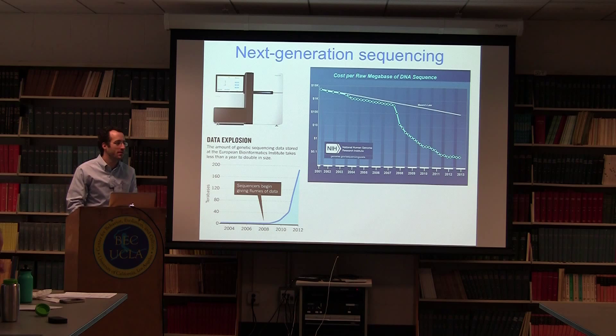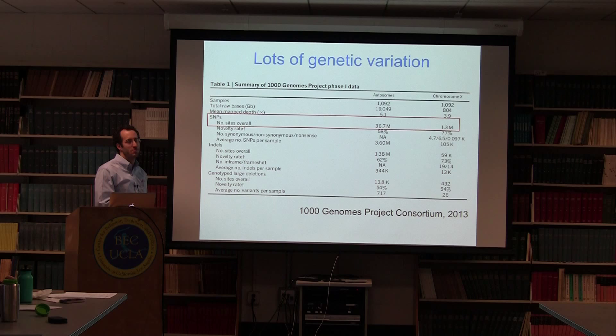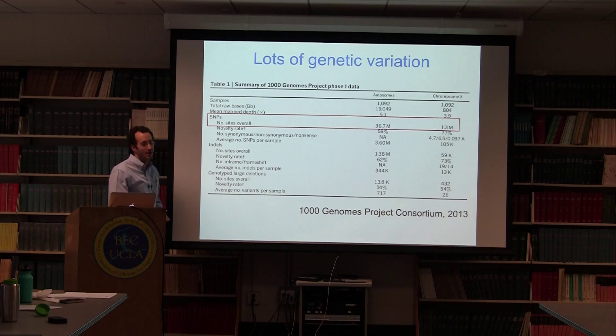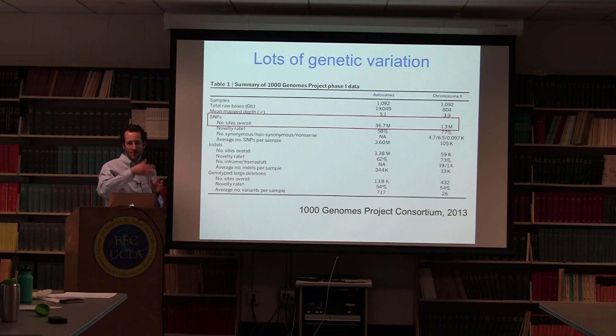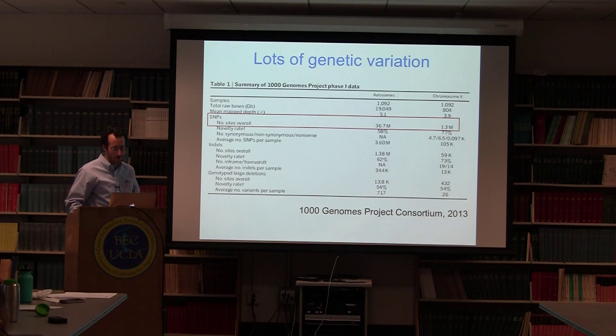We are entering a time when the field of population genetics is no longer data limited — there is plenty of data to be analyzed. Additional evidence of that comes from large-scale projects such as the 1,000 Genomes Project in humans, where they sequenced just over 1,000 humans to low coverage. They generated 19,000 gigabases of DNA sequence and found over 36 million SNPs across all of those genomes. This enterprise of generating genetic variation data from large numbers of individuals is going to increase over the coming years.